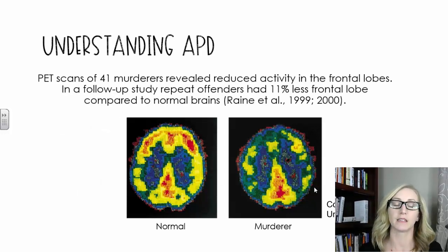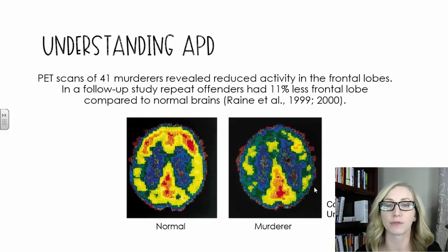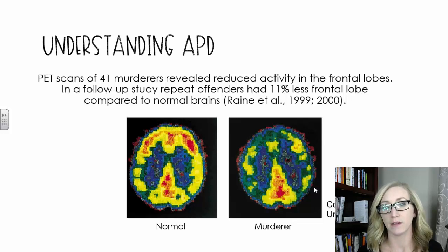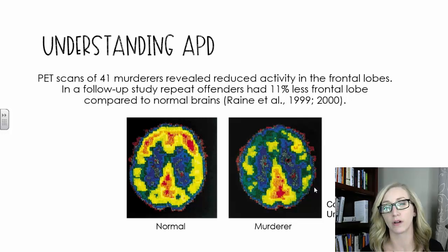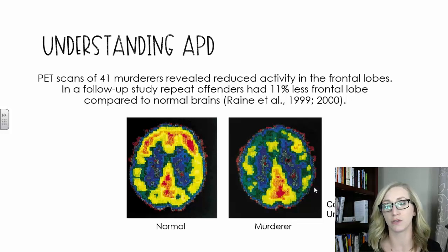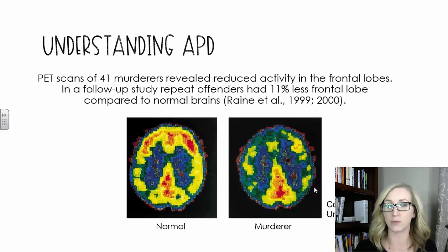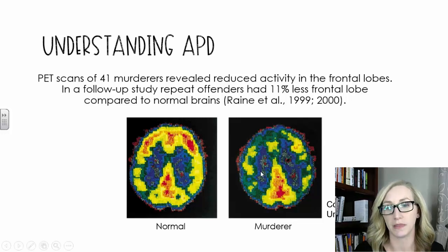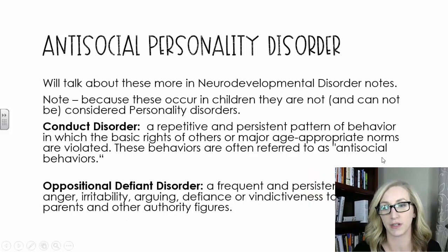PET scans of 41 murderers revealed reduced activity in the frontal lobes. In a follow-up study, repeat offenders had 11% less frontal lobe activity compared to normal brains, which you can see in the scans on the screen here.